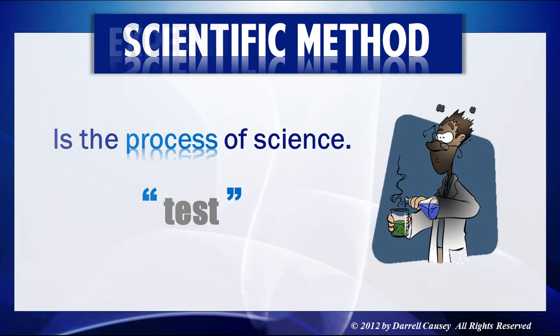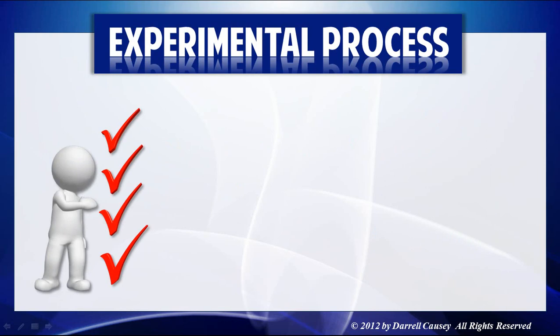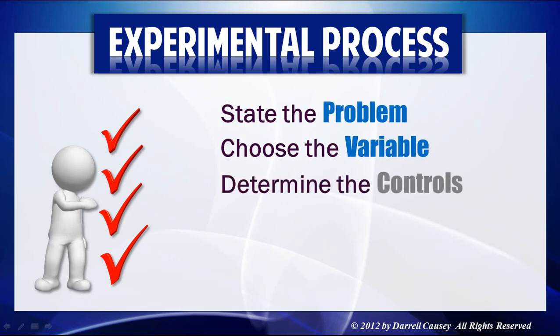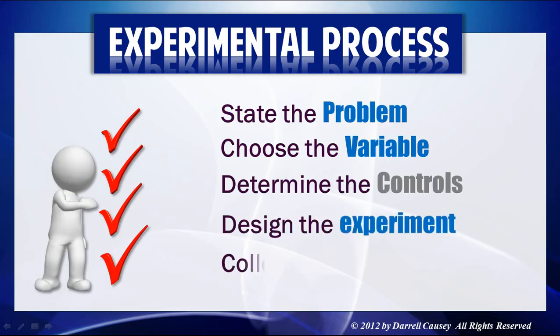The experimental process involves: state the problem, choose the variable or variables, determine the controls, design the experiment, and then collect your data. When you're done collecting your data, we go back to analyzing it through the scientific method.